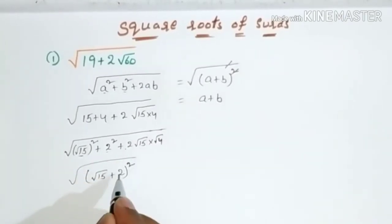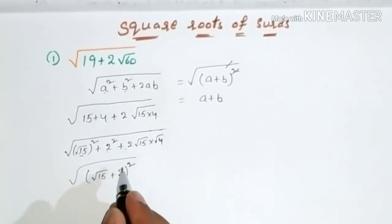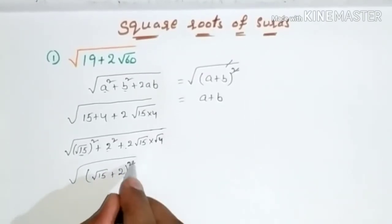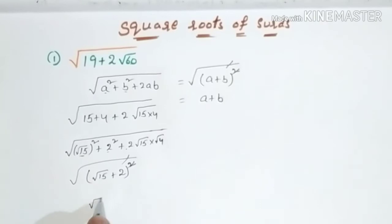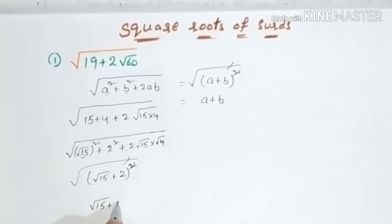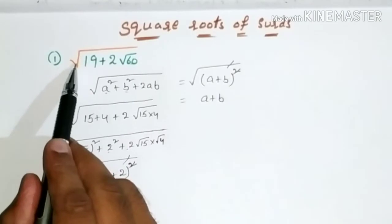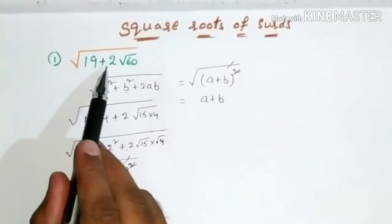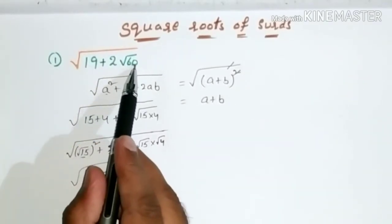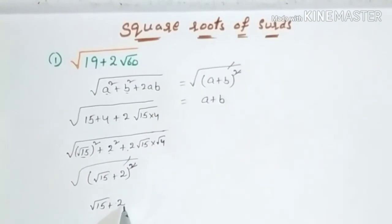So it becomes (√15 + 2) whole square. The square and root get cancelled, giving us √15 + 2. Therefore, the square root of 19 + 2√60 equals √15 + 2.